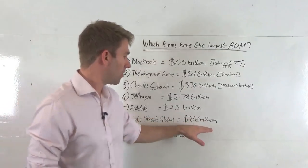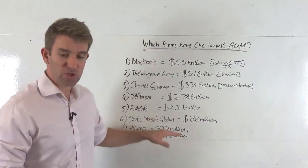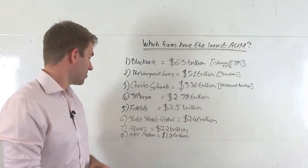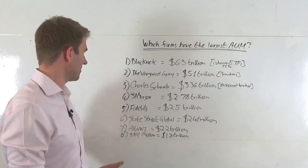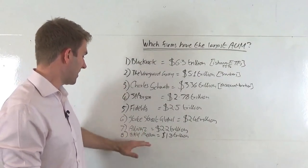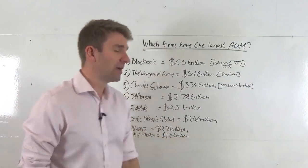State Street Global, $2.4 trillion assets under management. Number seven, Allianz, $2.2 trillion. That's a German company. So I think that's the first probably non-US company on the list. And then BNY Mellon, Bank of New York Mellon, $1.8 trillion.